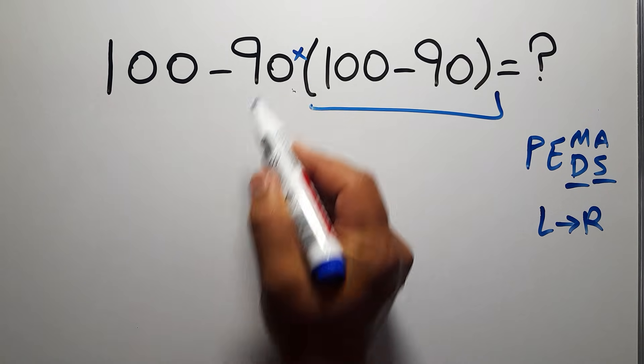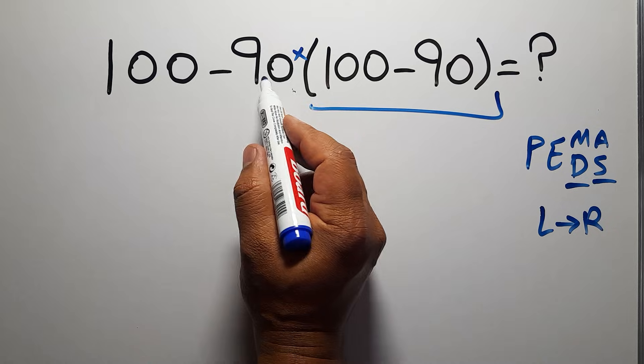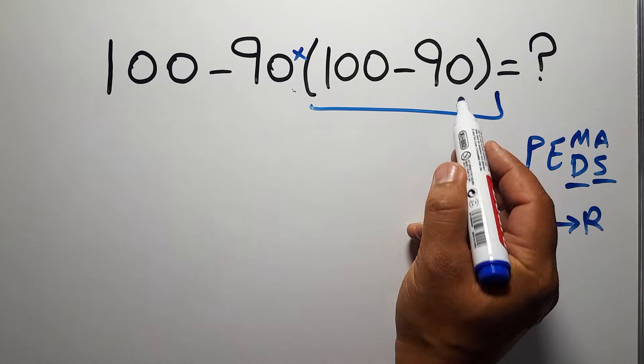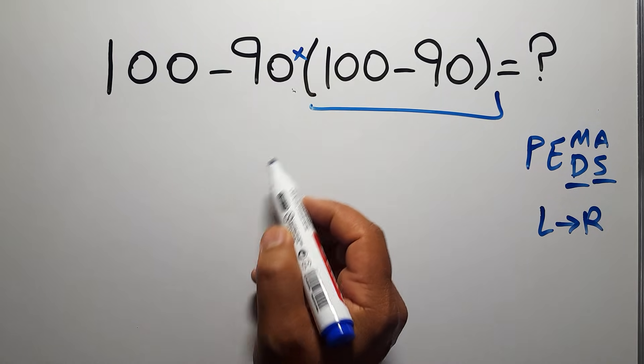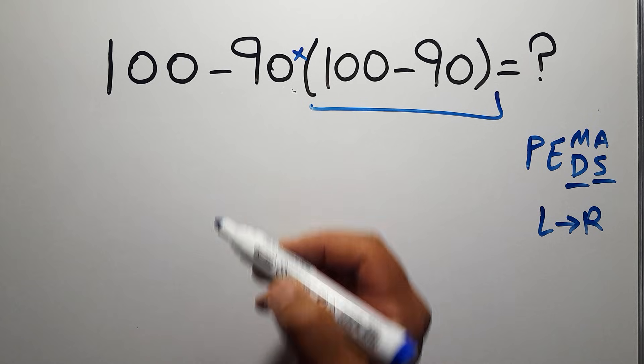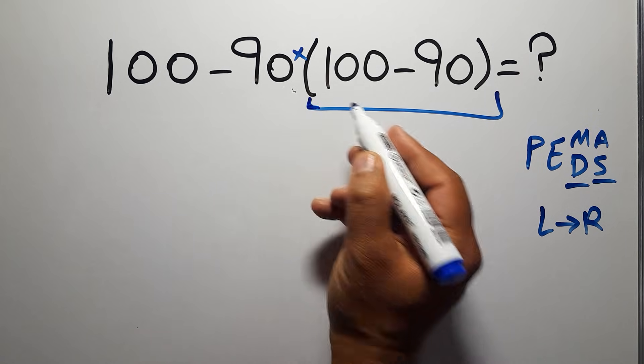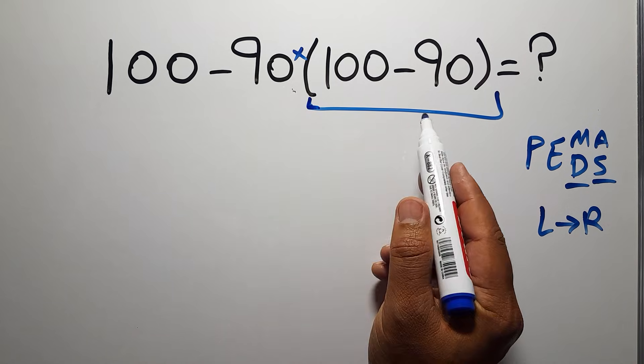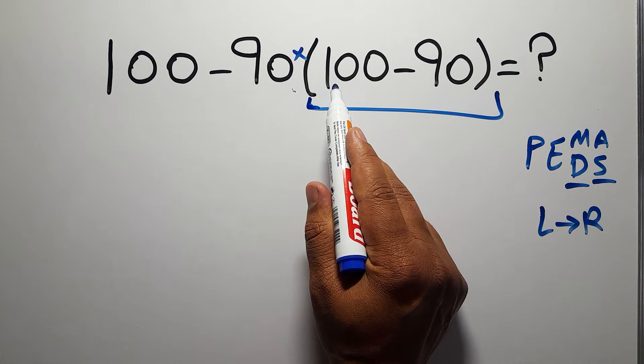Because in mathematics when a number is placed next to parentheses, it means multiplication, and we usually don't write the multiplication sign for brevity. Let's do first this parentheses. Inside these parentheses we have 100 minus 90 which equals 10.